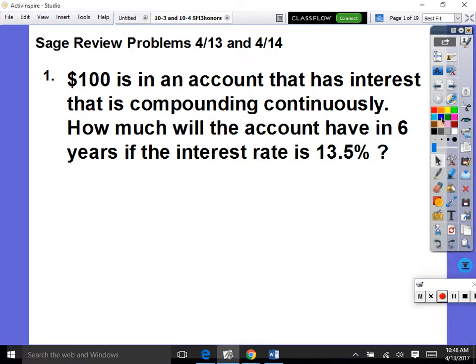Okay, let's get started here. So what formula would you use? P e r t. So y is equal to p, which is our put down amount, which is a hundred, e is just a number raised to the interest rate 0.135, and time in the account is six, and then you just type it into your calculator.